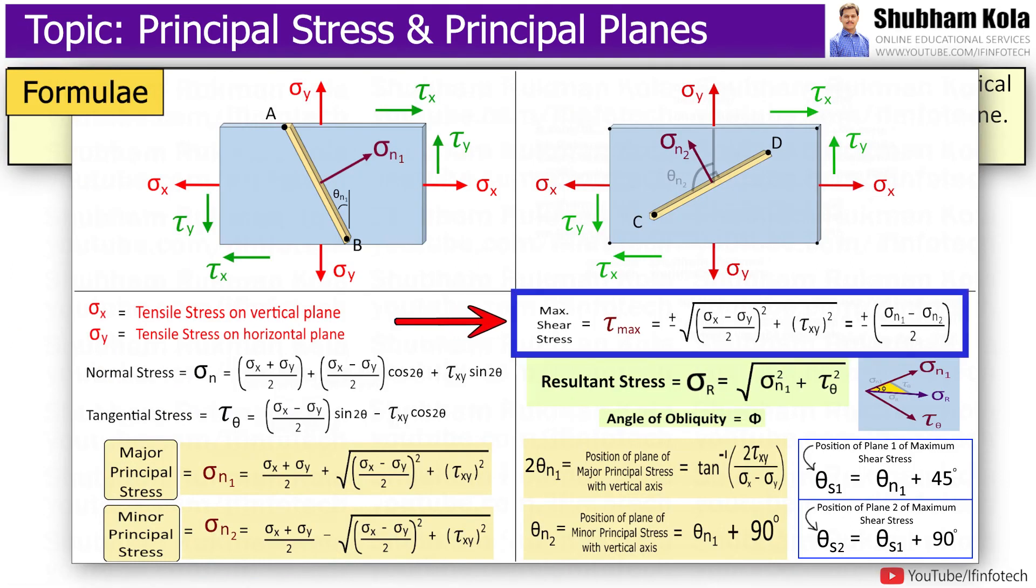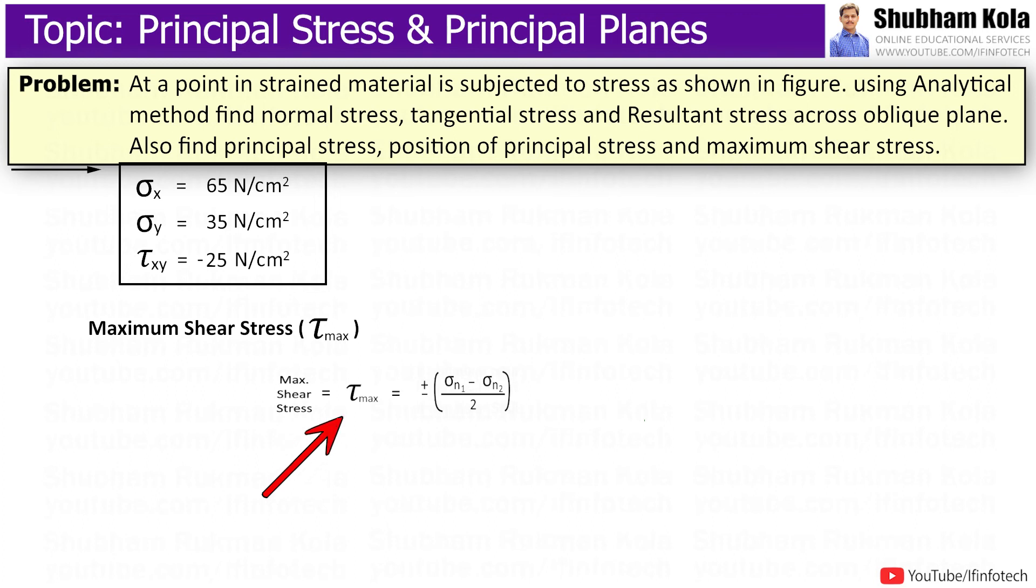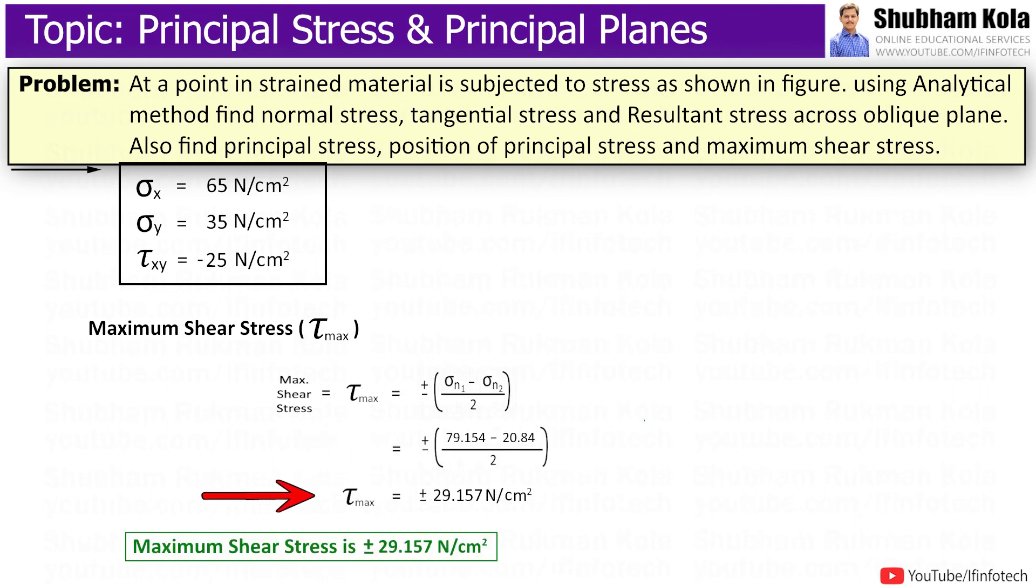Now, we have to calculate maximum shear stress, that is tau max, which is equal to plus or minus sigma n1 minus sigma n2 divided by 2. So, put the values of principal stress, sigma n1 and sigma n2, and I will get tau max will be plus 29.157 newton per centimeter square and minus 29.157 newton per centimeter square.